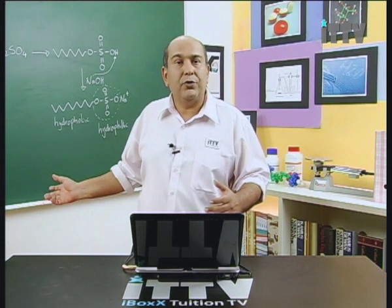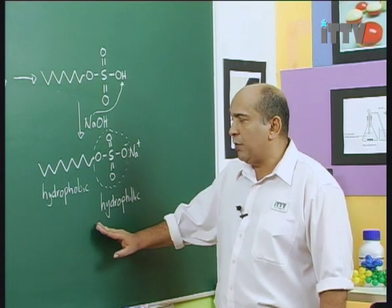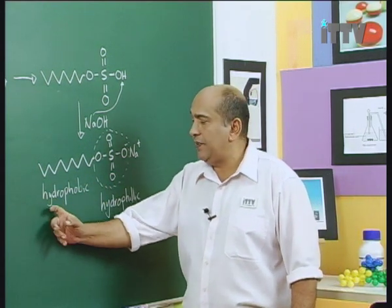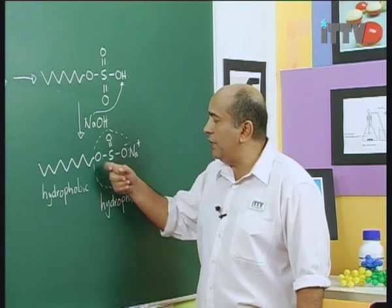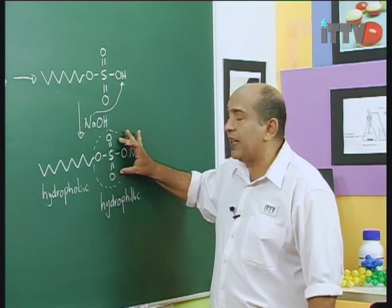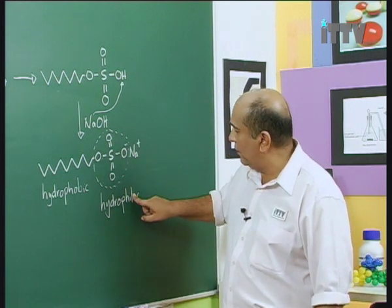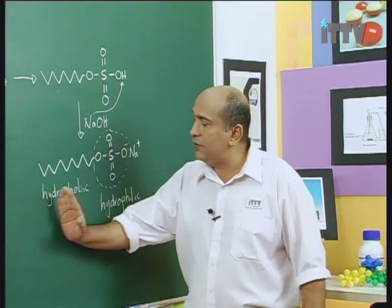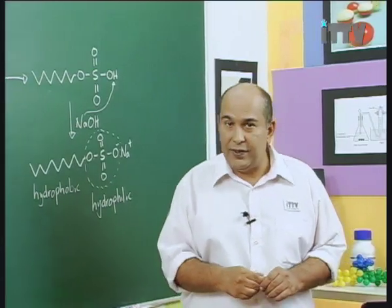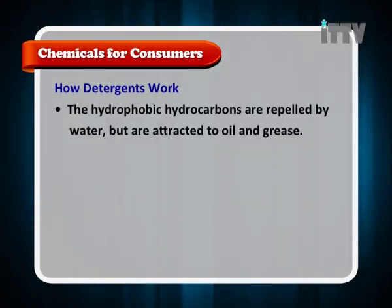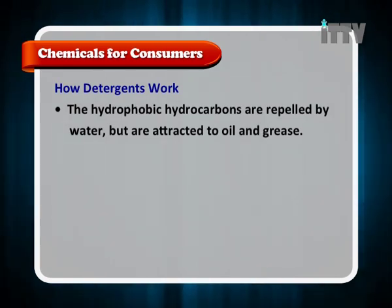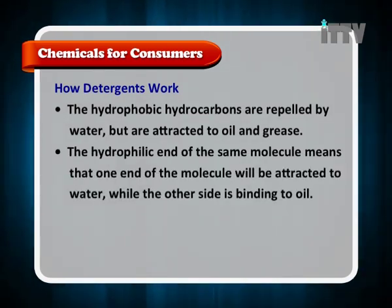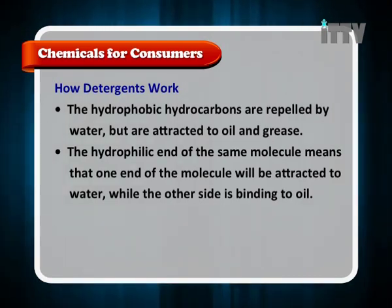Going back to the board: the hydrocarbon chain represents the hydrophobic part, and the area that comes from the concentrated sulfuric acid represents your hydrophilic head. This part will dissolve in the water and this part will dissolve in the grease. How detergents work: the hydrophobic hydrocarbons are repelled by water but are attracted to oil and grease, while the hydrophilic end means one end of the molecule is attracted to water while the other side is binding to oil.